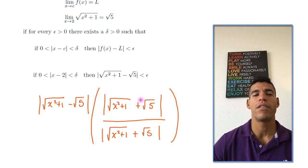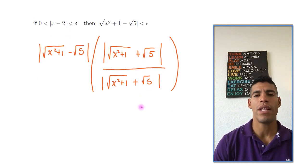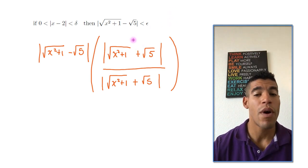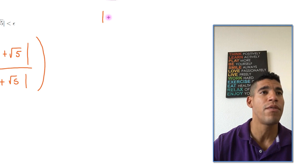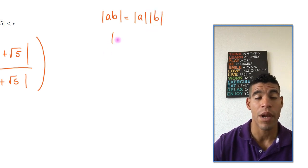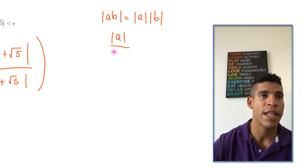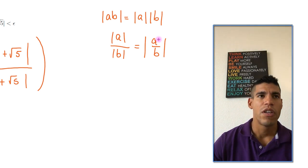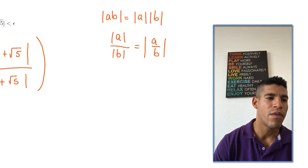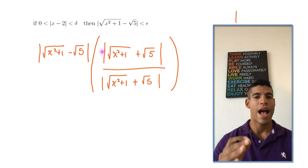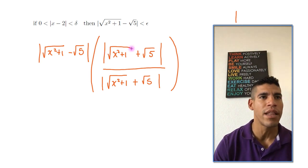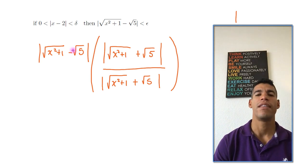Why do we want this? Because one of the properties of absolute value is that the absolute value of a times b equals the absolute value of a times the absolute value of b. Also very important: the absolute value of a over b equals the absolute value of a divided by b, where a and b are any real numbers. We're going to use these two properties to solve our problem.